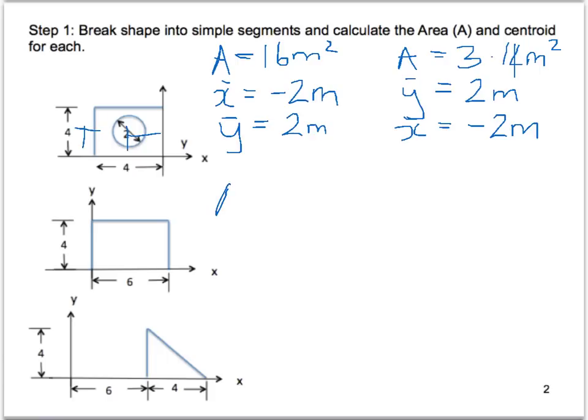Our second segment here, the area is going to be 4 times 6, which would be 24m squared. Our Y bar will be halfway up here, so that is going to be 2m. And the X bar will be halfway along here, so half of 6, which is 3m.